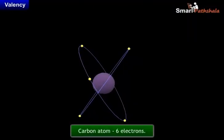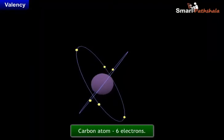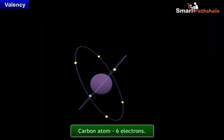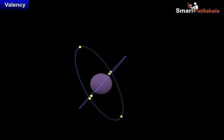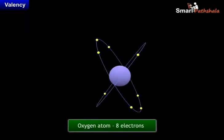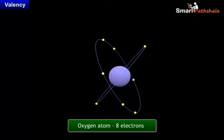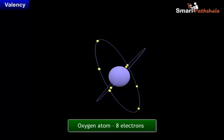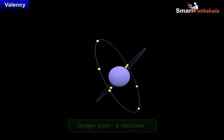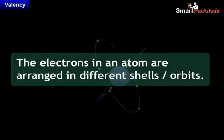For example, a carbon atom has 6 electrons which revolve around the nucleus in a definite path. Another atom, such as oxygen, contains 8 electrons and revolves around the nucleus in a definite path. We can see that the electrons in an atom are arranged in different shells or orbits.